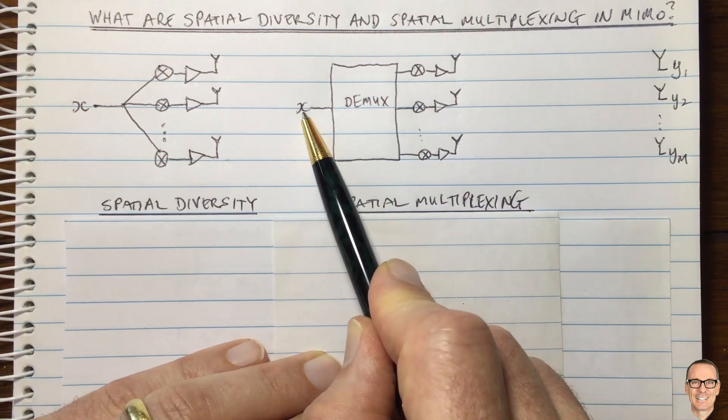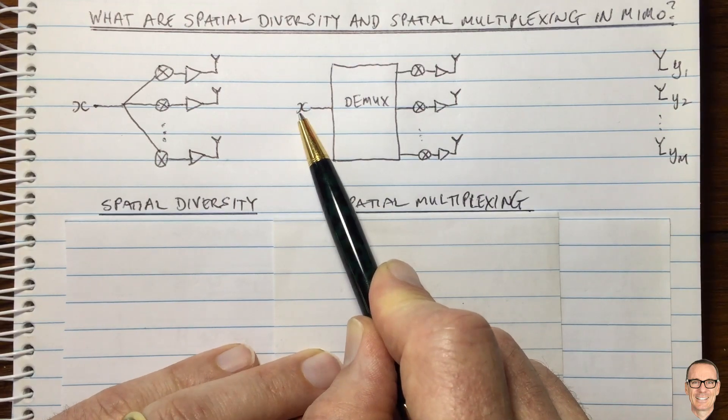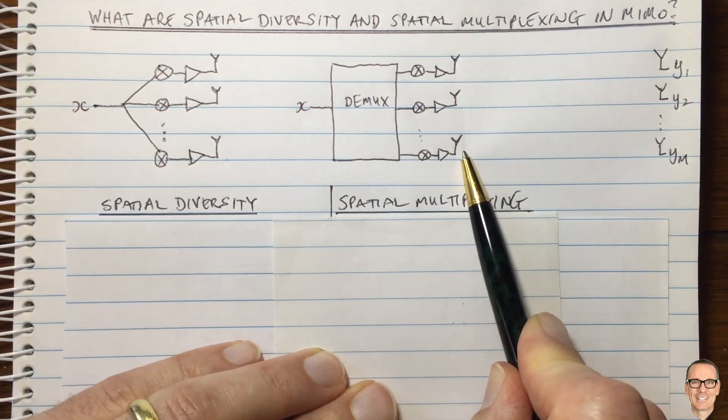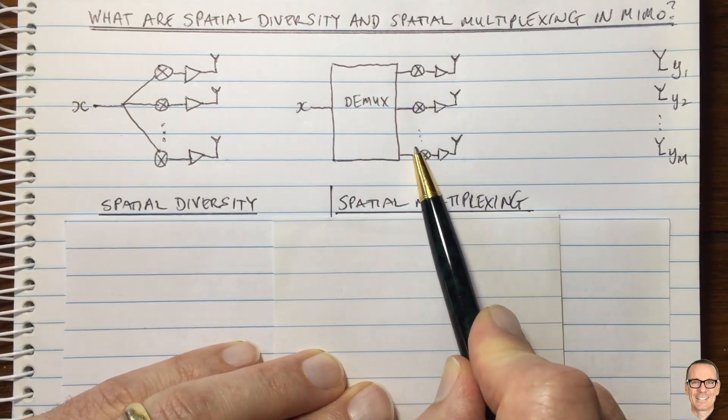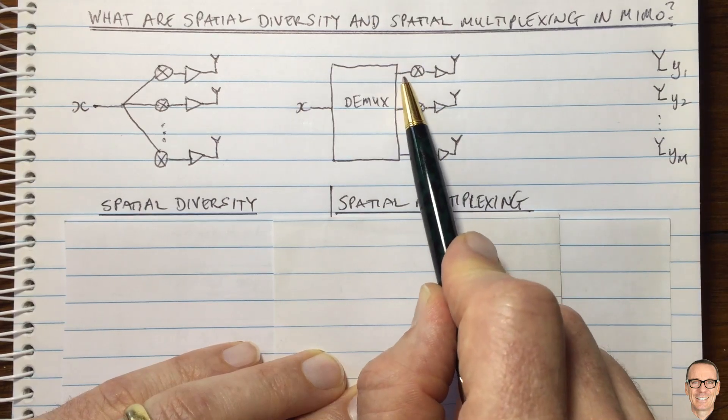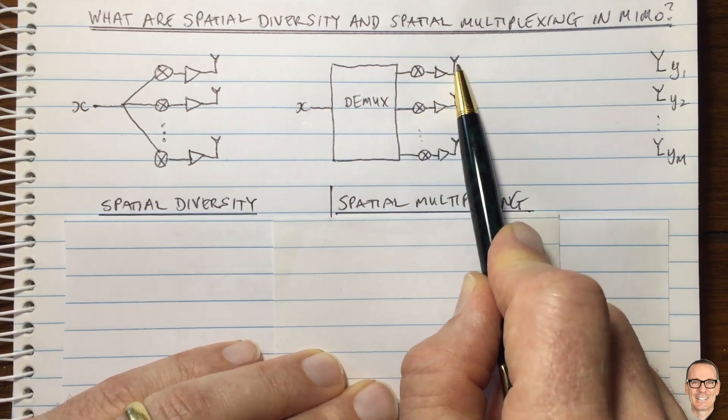And these are now sent at a lower data rate. Because here, these symbols are coming in at a high symbol rate. And when you're demultiplexing them, if you had M antennas, for example, then you would have M lower rate data sequences to be sent. And each sequence goes off its own antenna.